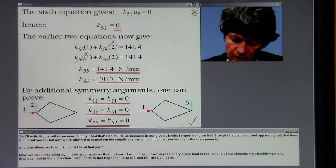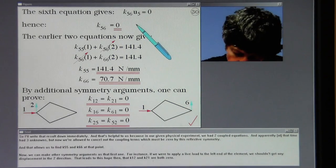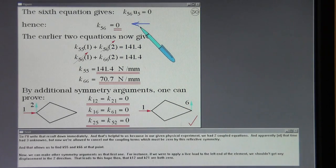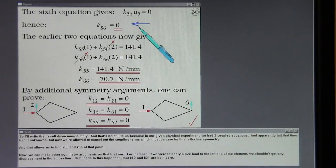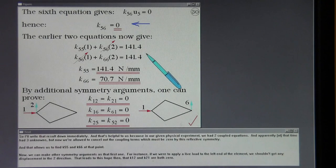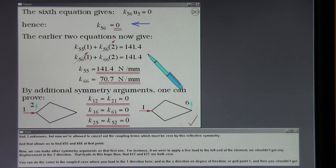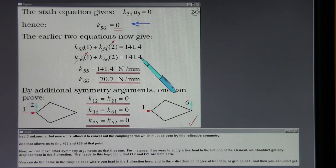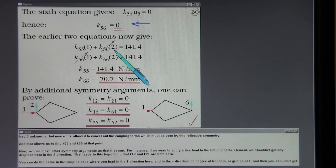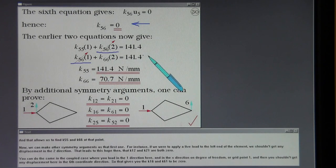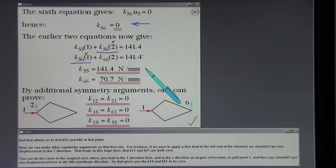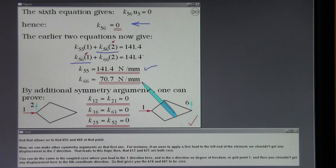So I'll write that result down immediately. And that's helpful to us because in our given physical experiment we had two coupled equations and apparently at that time we had three unknowns but now we're allowed to cancel out the coupling terms which must be 0 by this reflective symmetry. And that allows us to find K55 and K66 at that point.